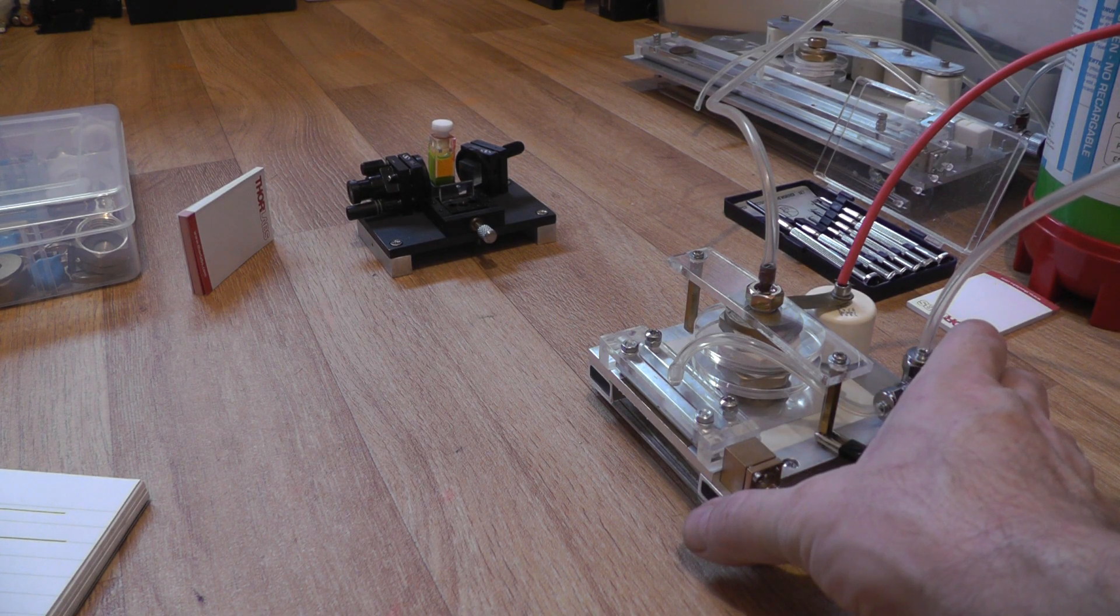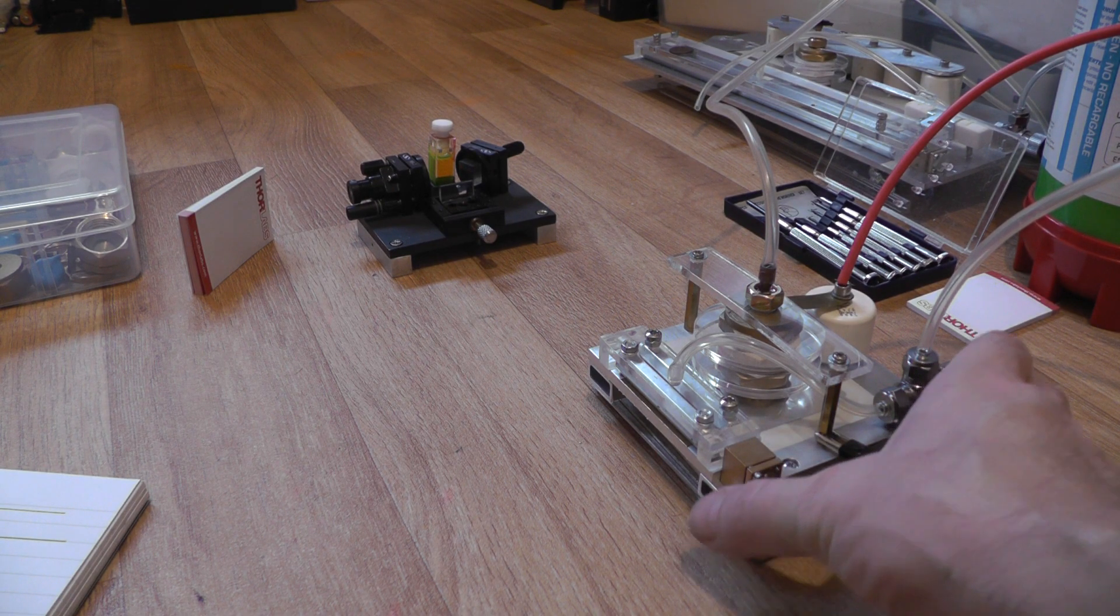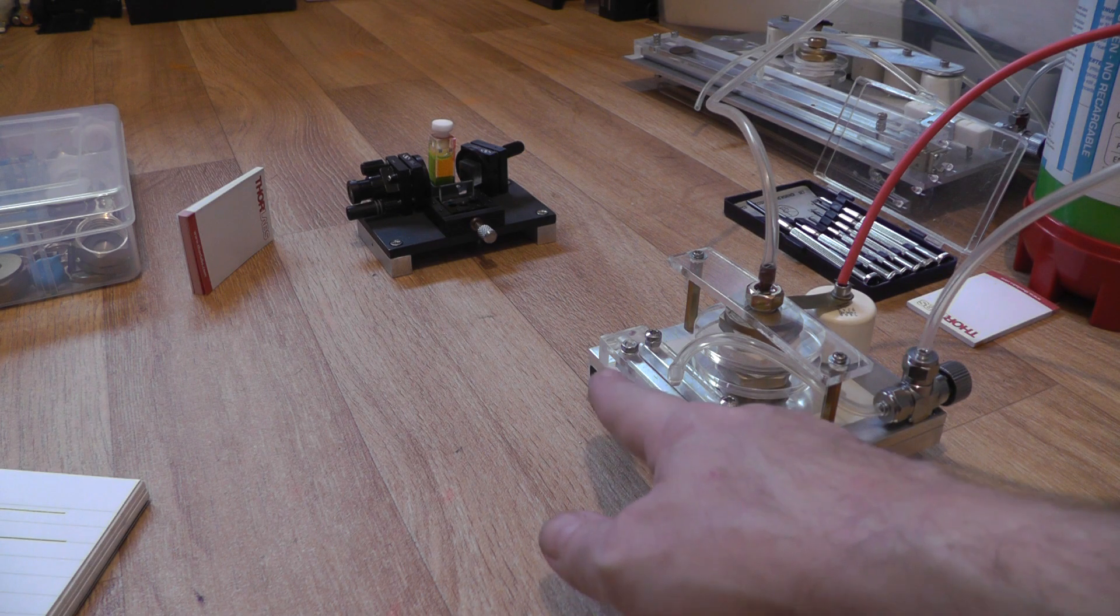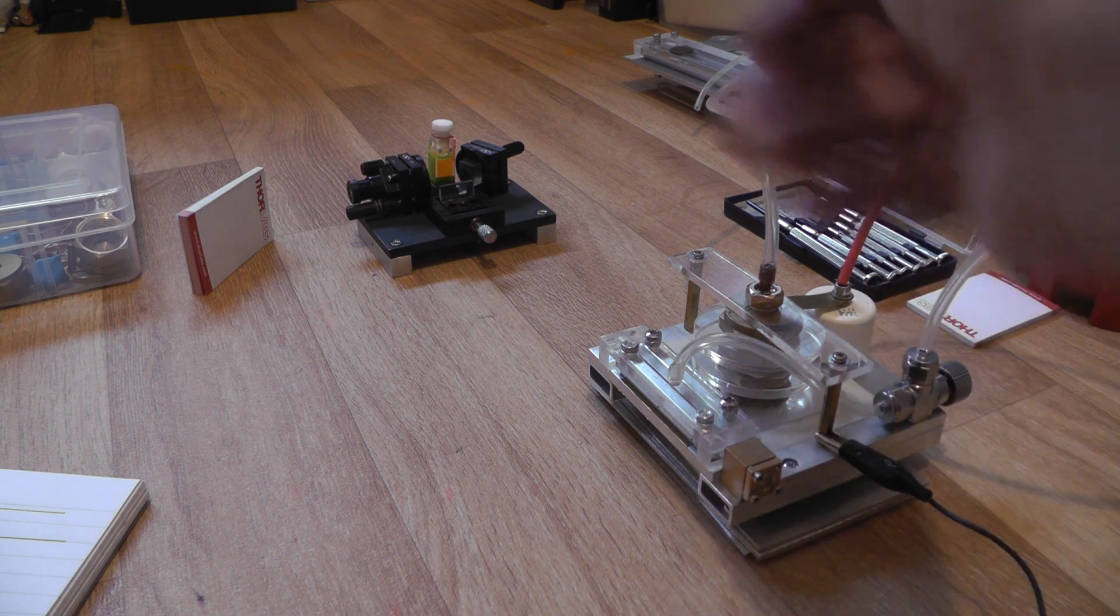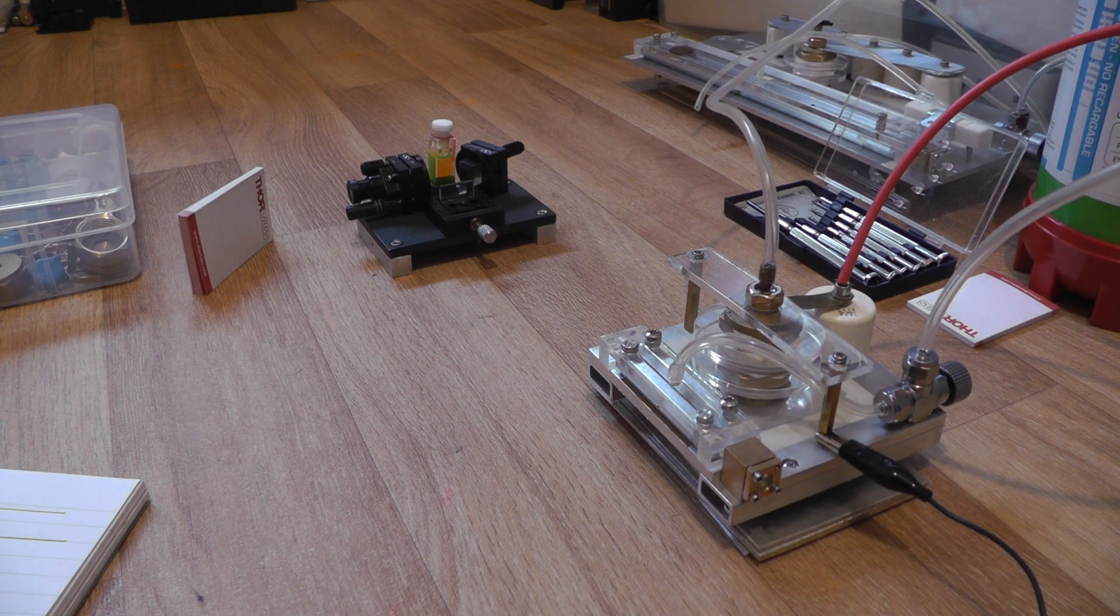This is the miniature homemade nitrogen laser that I showed in a previous episode. It's very tiny, the channel length is only six centimeters long, but it's more than capable of driving a small homemade dye laser.